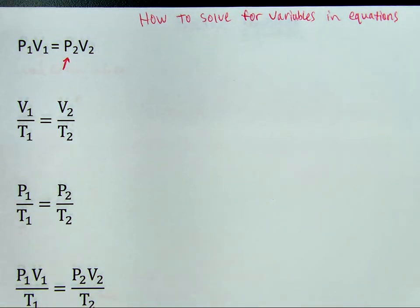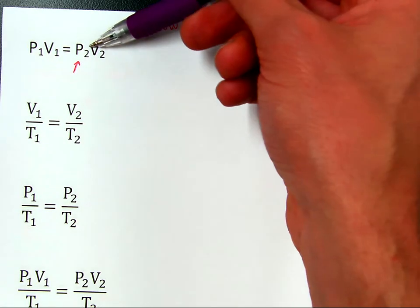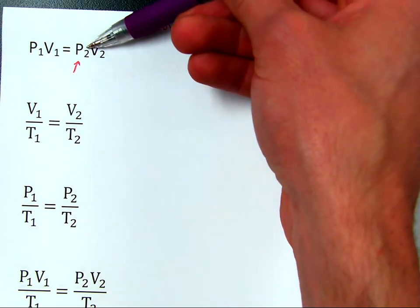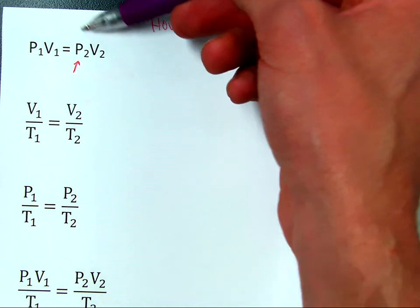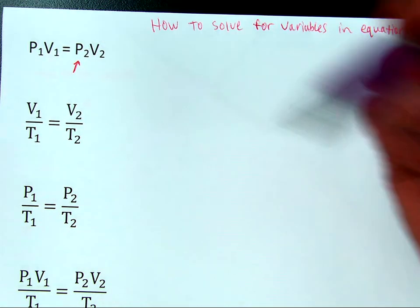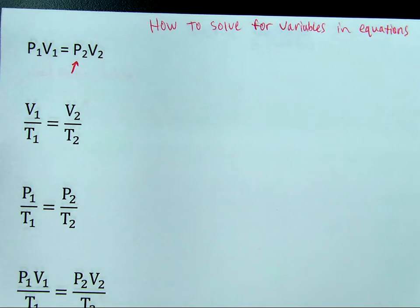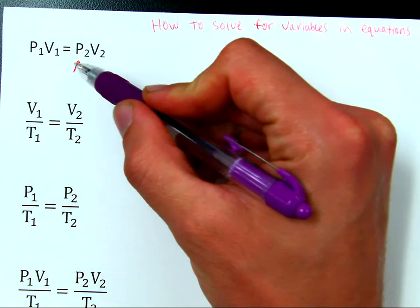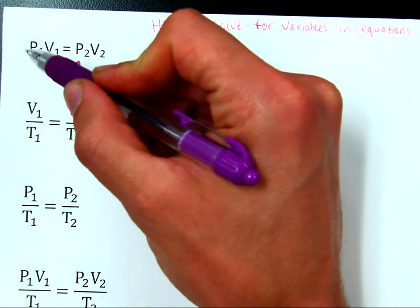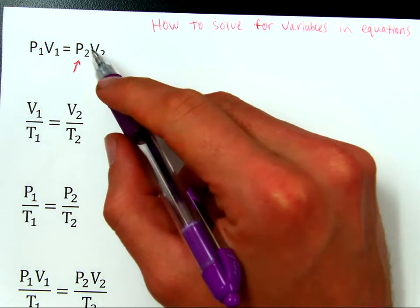Let's talk about the algebra behind that. In order to do that, if you're going to solve for what something is, you want to find what pressure 2 is, you need to get that variable by itself, which means this variable needs to be on the other side of the equal sign. So in order to do that, you need to do something to the equation, but it's very important to remember that what you do to one side must also be done to the other.